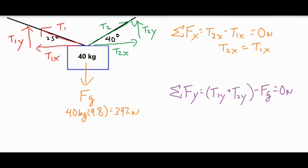To solve for our tensions we'll need to use a system of equations because we have two unknown variables. Fg we know is 392 newtons. It looks like we should start with the forces along the x direction, so let's rewrite T2x and T1x.